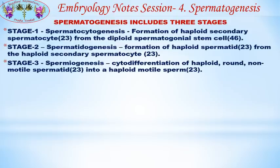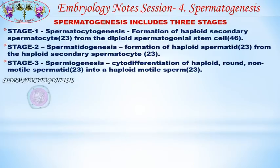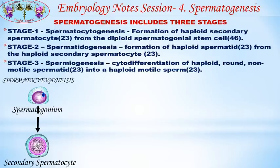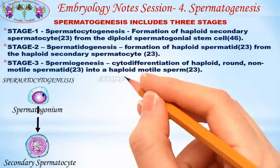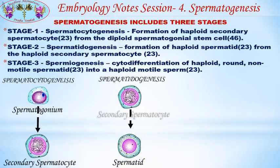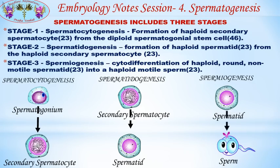Spermatogenesis includes three stages. Stage 1 is spermatocytogenesis — the formation of a haploid secondary spermatocyte from the diploid spermatogonial stem cell. Stage 2 is spermatidogenesis — the formation of a haploid spermatid from the haploid secondary spermatocyte. Stage 3 is spermiogenesis — the cytodifferentiation of a haploid round non-motile spermatid into a haploid motile sperm.